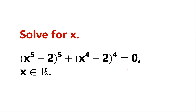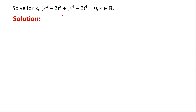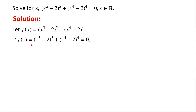Solve this equation, where x is a real number. This is a higher-degree polynomial equation. We let f(x) equal the left-hand side of the given equation. Because f(1) equals 1 to the power of 5 minus 2, to the power of 5, plus 1 to the power of 4, minus 2, to the power of 4, equals 0. So x equals 1 is a solution.